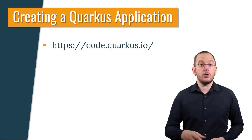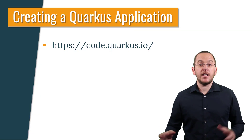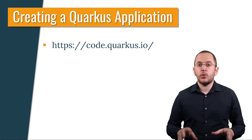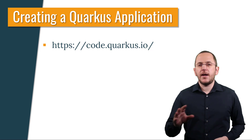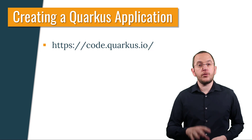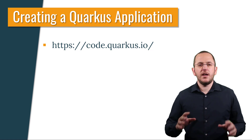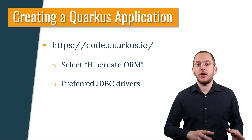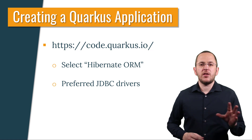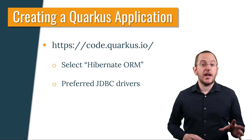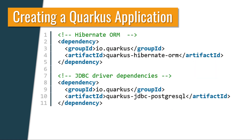Before you can start implementing your domain model, you need to create an application and add the required dependencies. The easiest way to do that is to use the interactive project generator at code.quarkus.io. It enables you to specify the metadata of your project and pick the required dependencies. If you want to use Hibernate, make sure to select Hibernate ORM and the JDBC driver of your preferred database. Based on this information, it then generates a project and provides it as a downloadable archive. If you prefer setting up the project yourself, please follow the guides at Quarkus.io and add a Quarkus-specific dependency to Hibernate and your JDBC driver to your project.